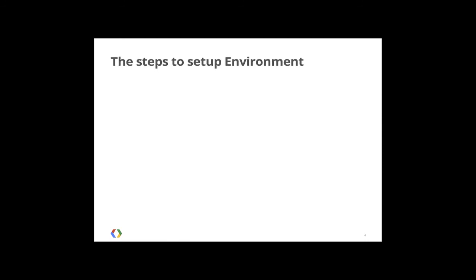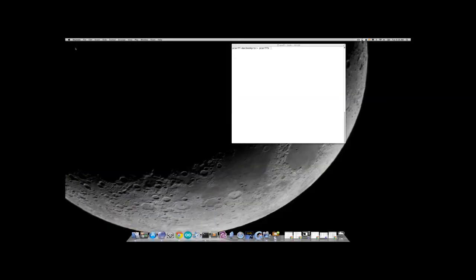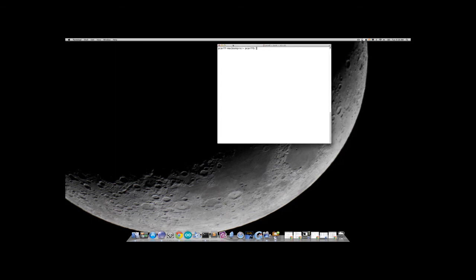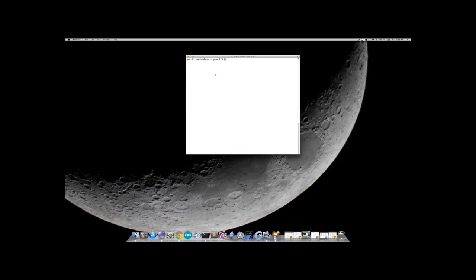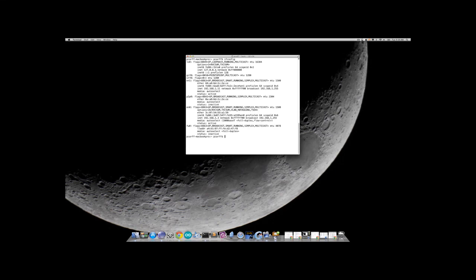There are four steps to set up your development environment for TV. The first is you need to get the IP address of your development machine. To demonstrate that, if we go to the terminal on your development environment — I happen to be using a Mac here — and type in ifconfig, you will see the network connections that you have on your laptop.